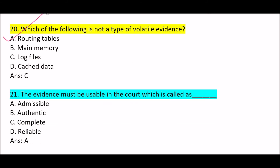Next question: which of the following is NOT a type of volatile evidence? Option A: routing tables. Option B: main memory. Option C: log files. Option D: cached data. Correct answer is Option C — log files. Log files are not a type of volatile evidence.